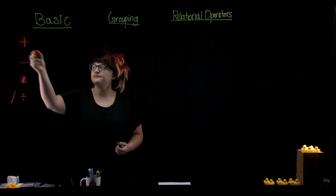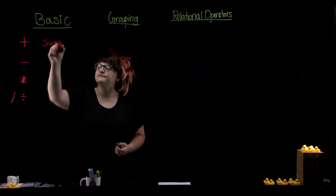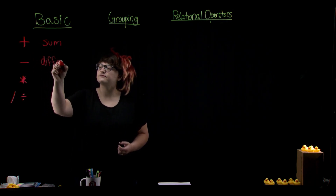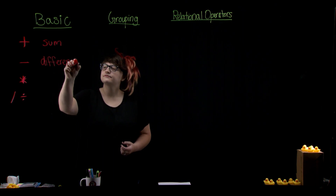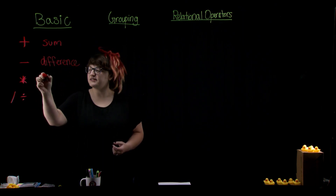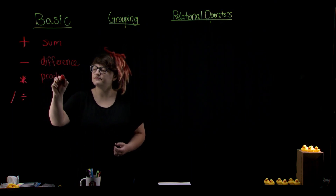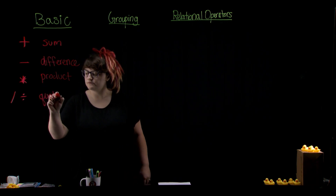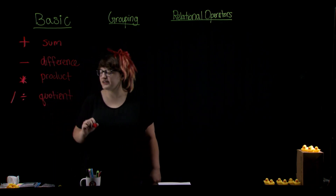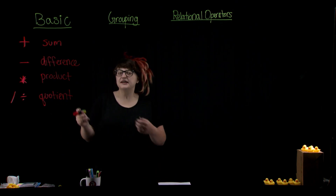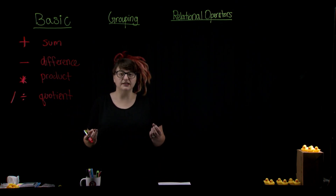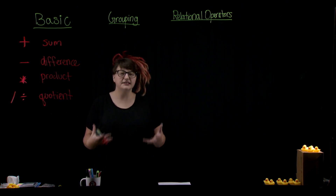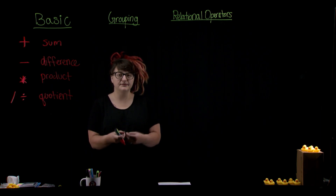So do any of these ring a bell? For plus we've got sum, minus is going to be difference, multiplication we have product, and when we divide we end up with a quotient. These terms tell us how a specific result was calculated. If I tell you that 10 is the product of 5 and 2, that would insinuate to you that I multiplied those together to get 10.